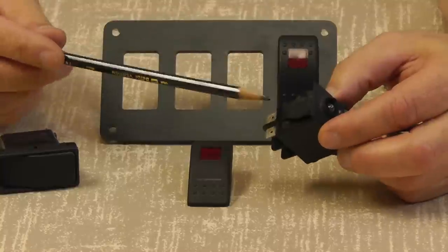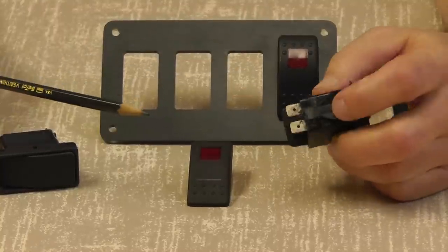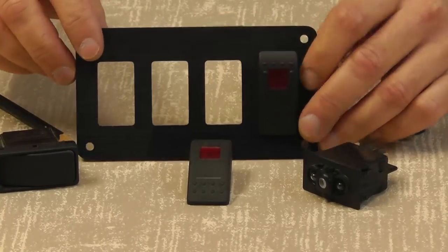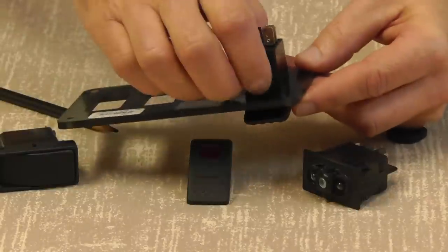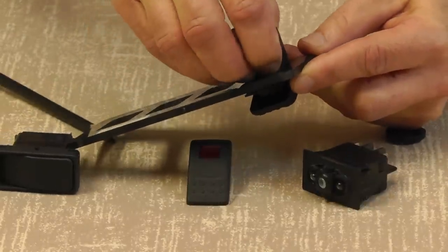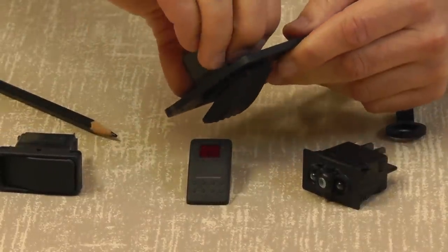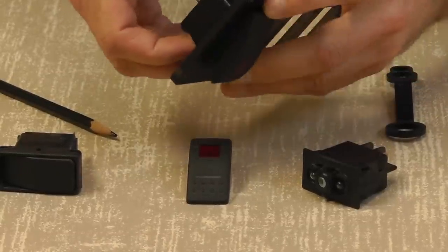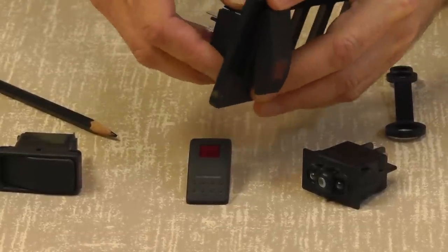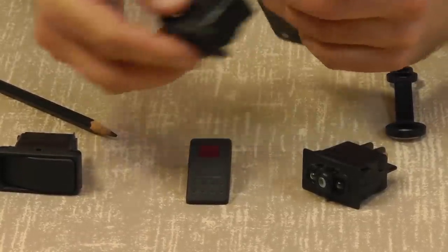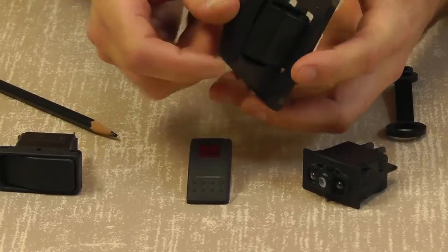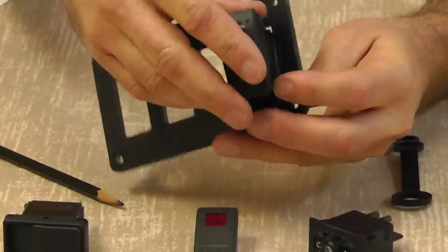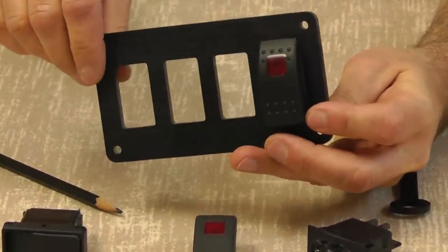On the body you have installation wings and these are flexible wings that hold it into place in the panel. So in a panel, to take it out, you can press those wings down one at a time and kind of walk the switch out. It's very easy. It pops out and to put them in, the switch will just pop in place.